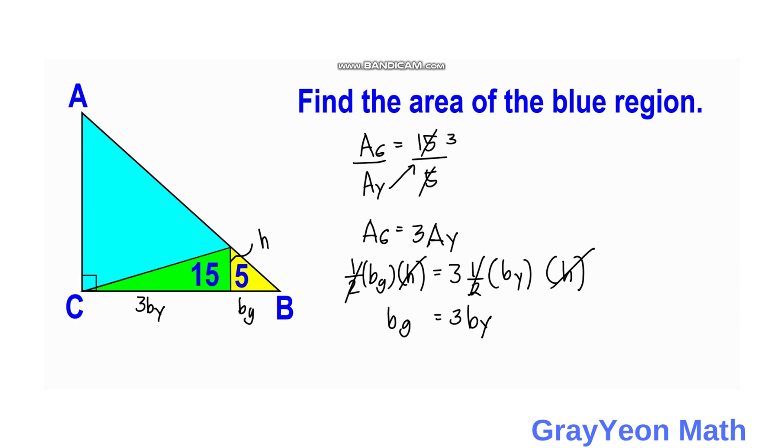Okay, so next is we focus on the yellow triangle. So the yellow triangle, for every by there is a height h. So if you sum this up, this will become 4by.